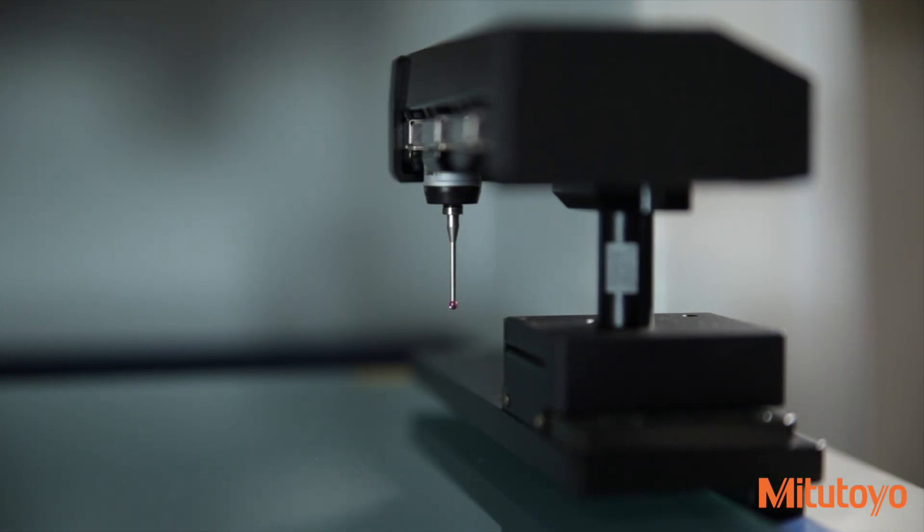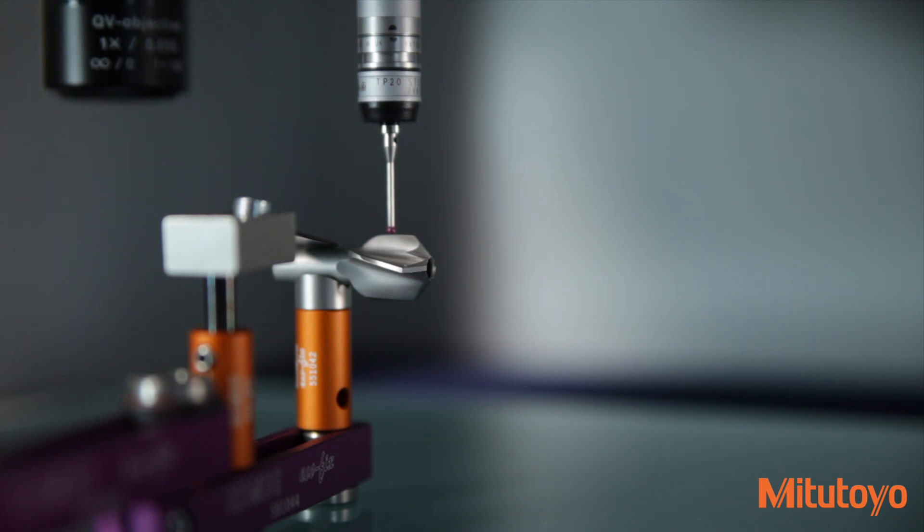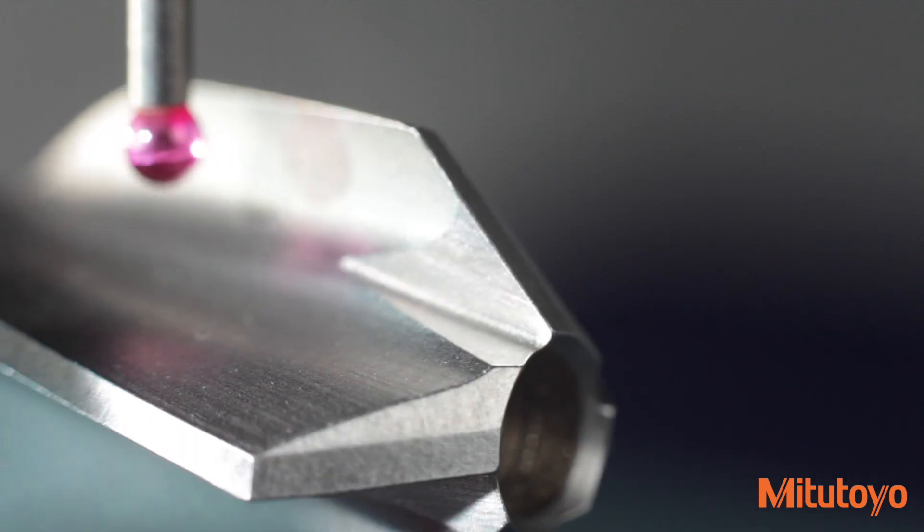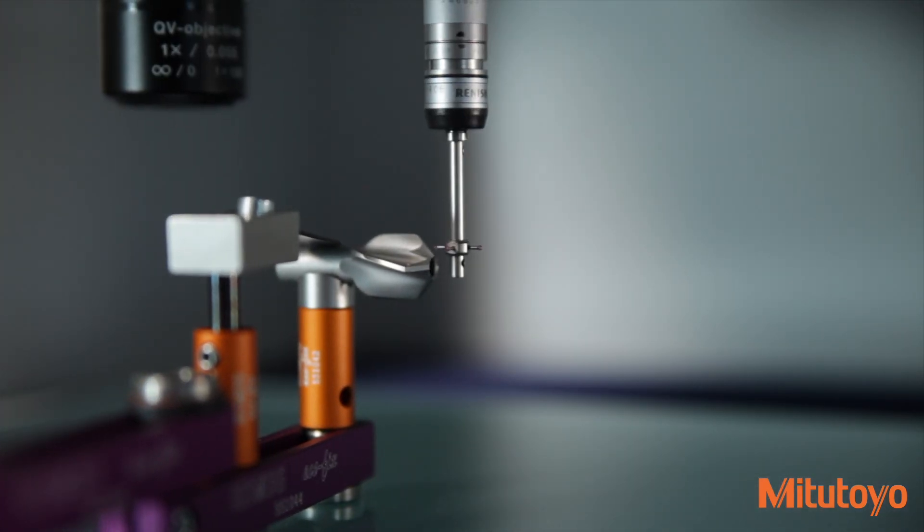Quick Vision models also support touch trigger probes to combine non-contact and contact measurements in a single platform, measuring complex work pieces that cannot be inspected with vision alone. The optional touch probe reduces the need for multiple setups for a single part.